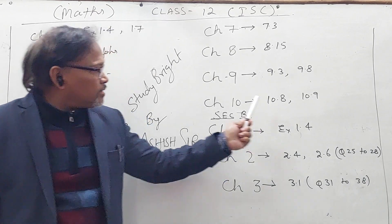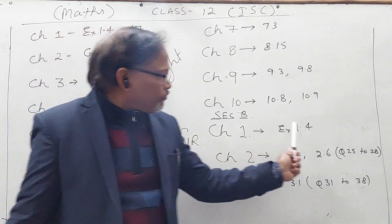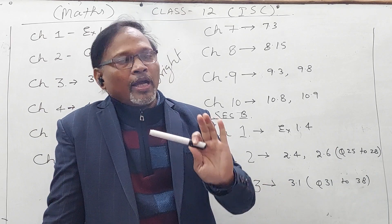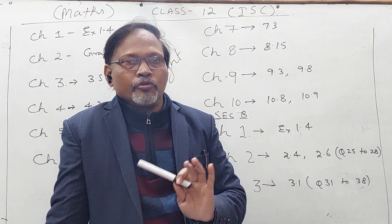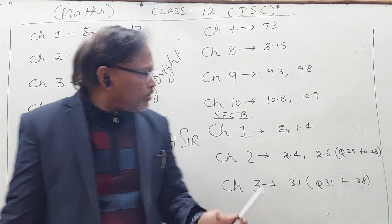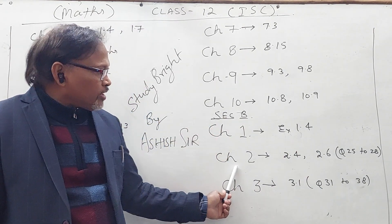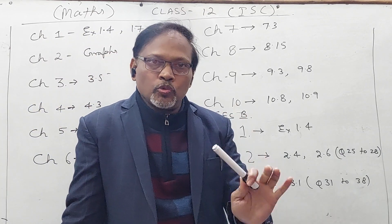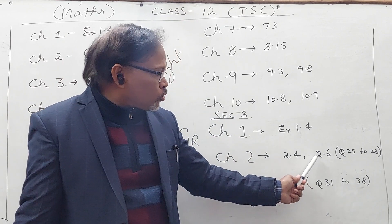Now in Section B, from Chapter 1 which is the Vectors chapter, exercise 1.4 is not there. Only scalar triple product is reduced. Also geometrical proof of theorems by vectors is not there. No questions will come where you have to prove geometrical theorems using vectors. Chapter 2 is Three-Dimensional Geometry. In straight lines, the shortest distance between skew lines and coplanar lines are not in the syllabus, so exercise 2.4 is not there.